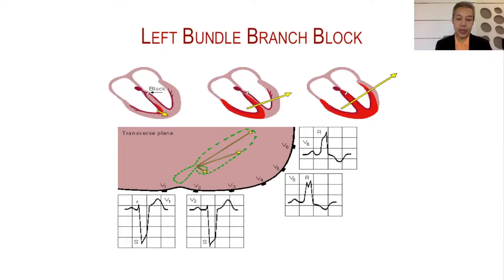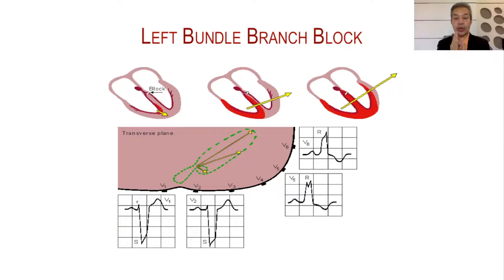Now let me go to the changes that will make the QRS wide. The right and left ventricles, because of the organization of the conduction system, are actually simultaneously contracting or depolarizing. Any delay will actually separate the QRS, making it wide and notched — you will see two peaks. That's what happens when there is a delay in either bundle branch.